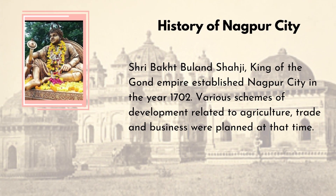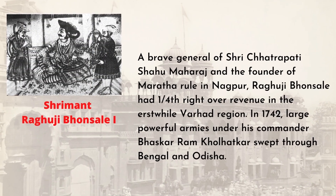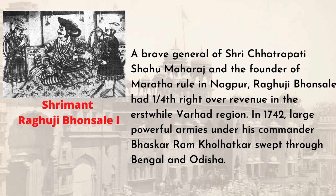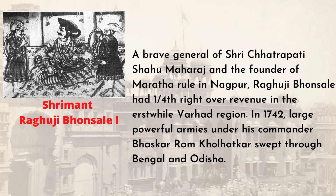Various schemes of development related to agriculture, trade and business were planned at that time. A brave general of Shri Chhatrapati Shahu Maharaj and the founder of Maratha rule in Nagpur, Raghuji Bhonsale, had one quarter right over revenue in the erstwhile Varhad region. In 1742, large powerful armies under his commander Bhaskar Ram Kholhatkar swept through Bengal and Odisha. Shri Srimant Raghuji Bhonsaleji did significant development works in Nagpur and created various ponds and lakes for the citizens' water requirements.